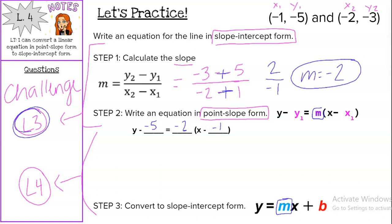Now before I start the process of converting to slope-intercept form, I'm going to simplify this equation first and get rid of those double negatives. So this is really y plus 5 equals negative 2 times x plus 1. Now that I have that simplified, I can start that converting process by distributing.